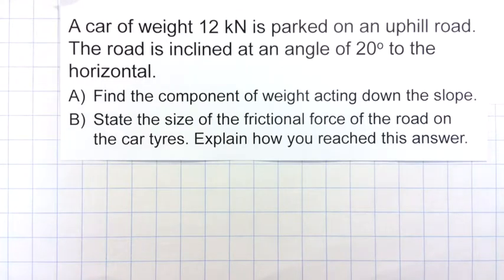In this video, we're going to look at answering these questions. A car of weight 12 kN is parked on an uphill road. The road is inclined at an angle of 20 degrees to the horizontal. Find the component of weight acting down the slope. And B, state the size of the frictional force of the road on the car tires. Explain how you reached your answer.